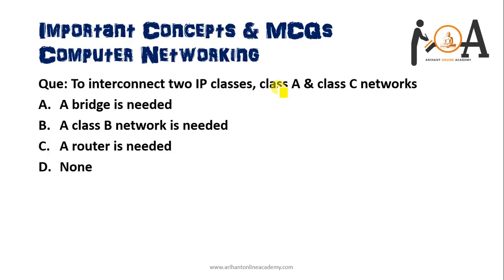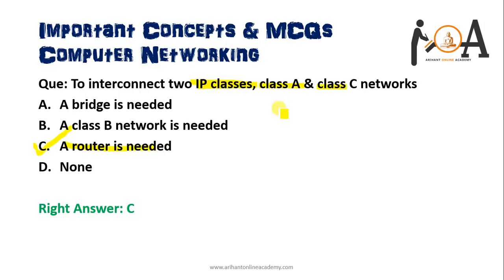The next question is: to interconnect two IP classes — a Class A and a Class C network — what is needed? A bridge, a Class B network, a router, or none? The correct answer is a router, because if you want to connect or interconnect any two networks, regardless of which class they belong to, a router is needed.